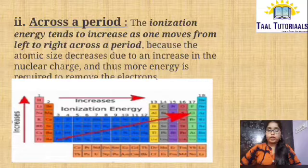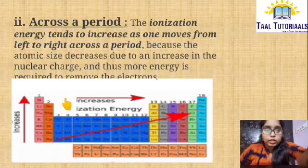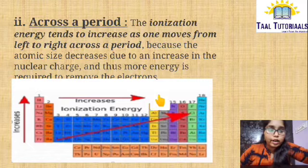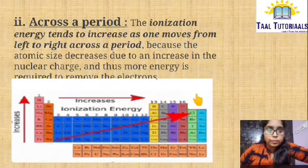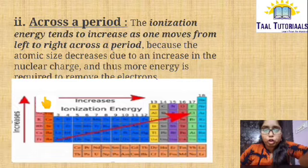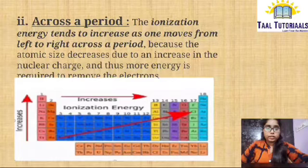In this picture, you can see there is an increase in ionization energy from left to right, across a period. And when you come from top to bottom, it decreases. They have given in the reverse order — if you take it from the bottom, it is increasing.